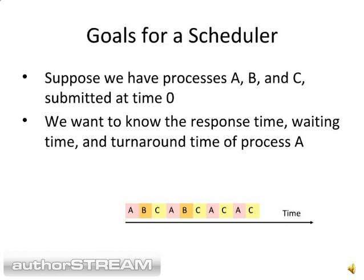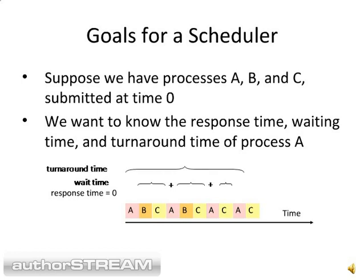Suppose we have processes A, B, and C submitted at time zero, and we want to know the response time, waiting time, and turnaround time of process A. The response time of process A is zero because it got the CPU at time zero. Wait time is the addition of different parts — when A is executing, that is not calculated in wait time; only when A is waiting is that time counted. Turnaround time is the total time from when your process comes in until it terminates.